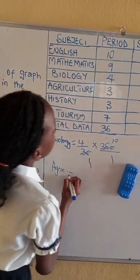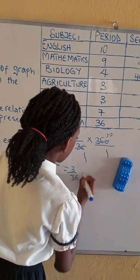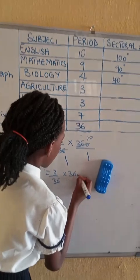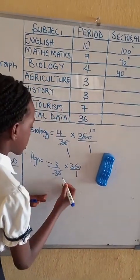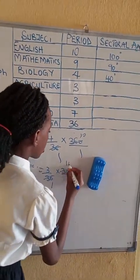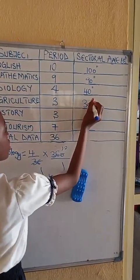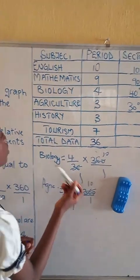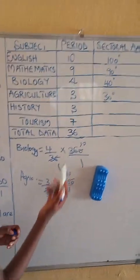Agric equals to 3 over 36 times 360 over 1. So 36 cancel here 1 and 10. So 3 times 10 is 30 degrees. So agriculture and history are the same number of periods, so it will be the same sector.